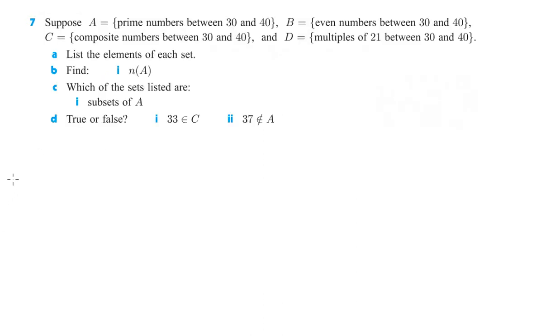Moving on to the last one from this assignment, 7. Suppose A equals the prime numbers between 30 and 40, B is even numbers between 30 and 40, C is the composite numbers between 30 and 40, D is the multiples of 21 between 30 and 40. List the elements of each set. So for part A, we're going to do set A, and then we'll do set B and set C and set D. So in A, prime numbers between 30 and 40.